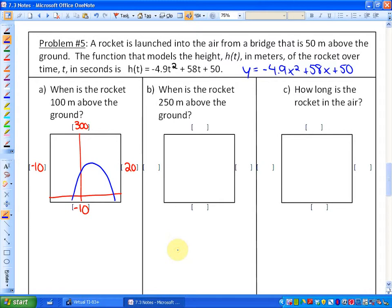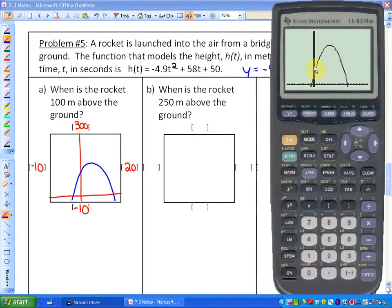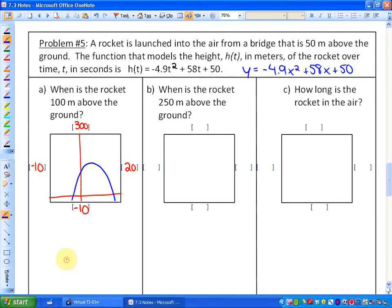So the first question states this. When is the rocket 100 meters above the ground? So in other words, it's 100 meters above the ground somewhere when y is 100. But how do we use technology in order to solve that? And the easiest way to do that is to understand that this means that y has to be equal to 100. Okay? So we are going to also graph that function.